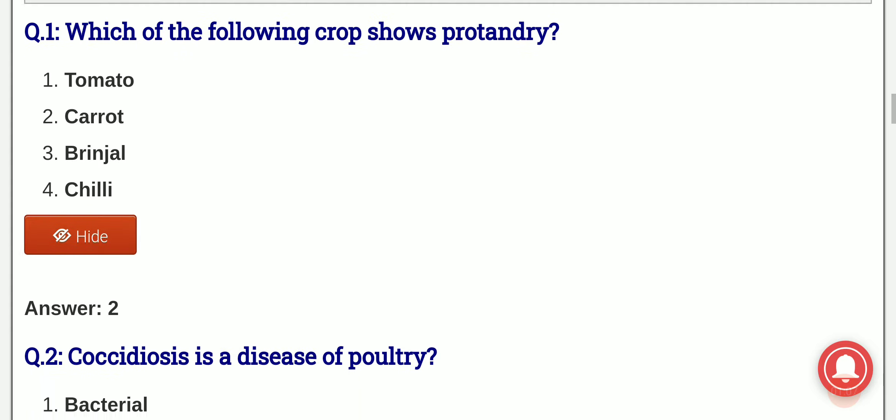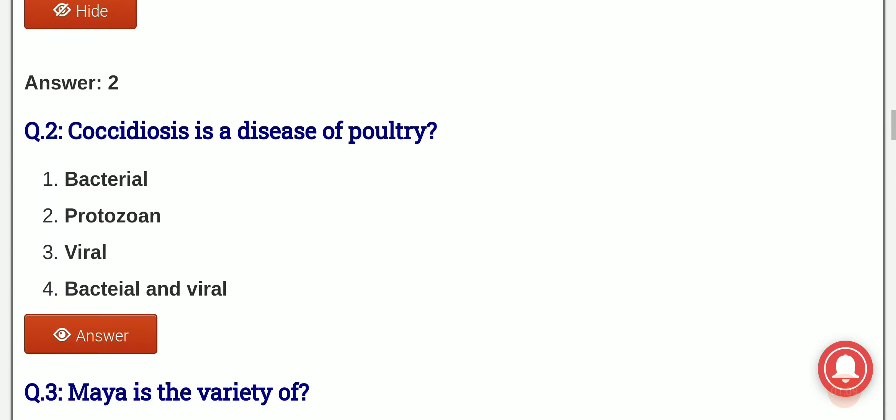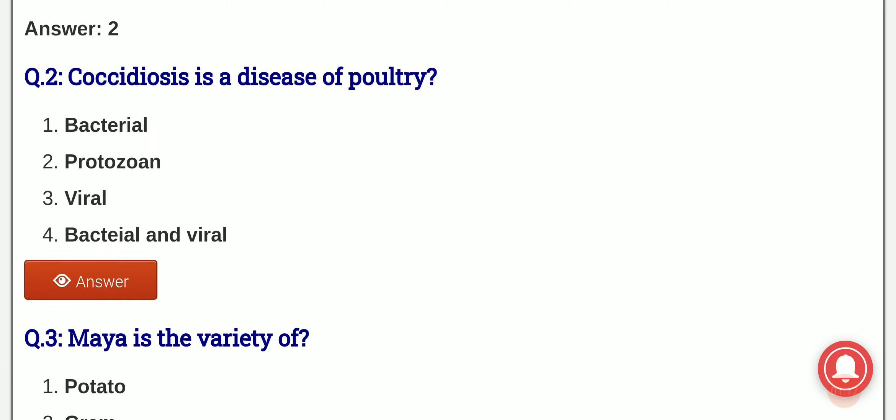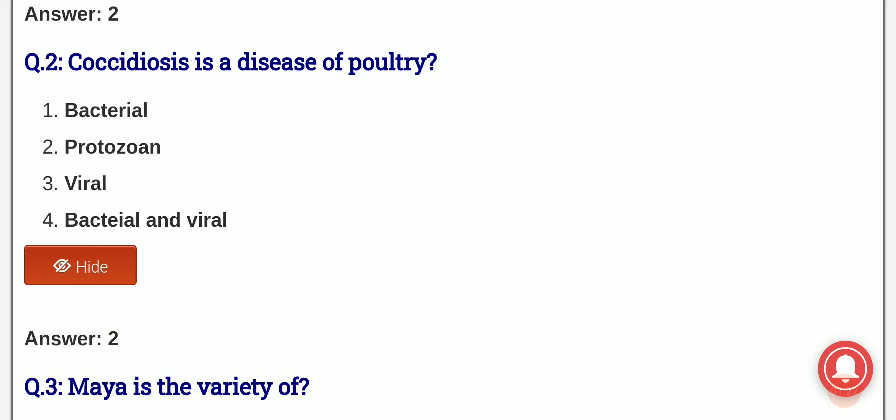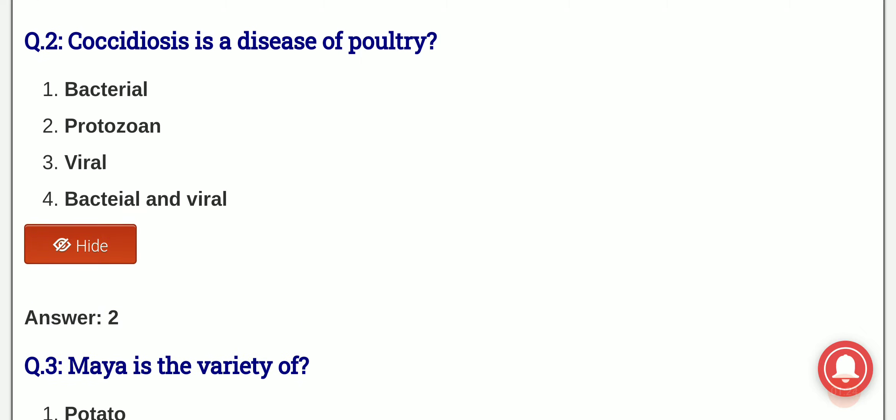Second question: coccidiosis is a disease of poultry that is caused by bacteria, protozoa, viral, or bacterial and viral. And the answer is option 2, that is coccidiosis in poultry or cattle is caused due to a protozoa.